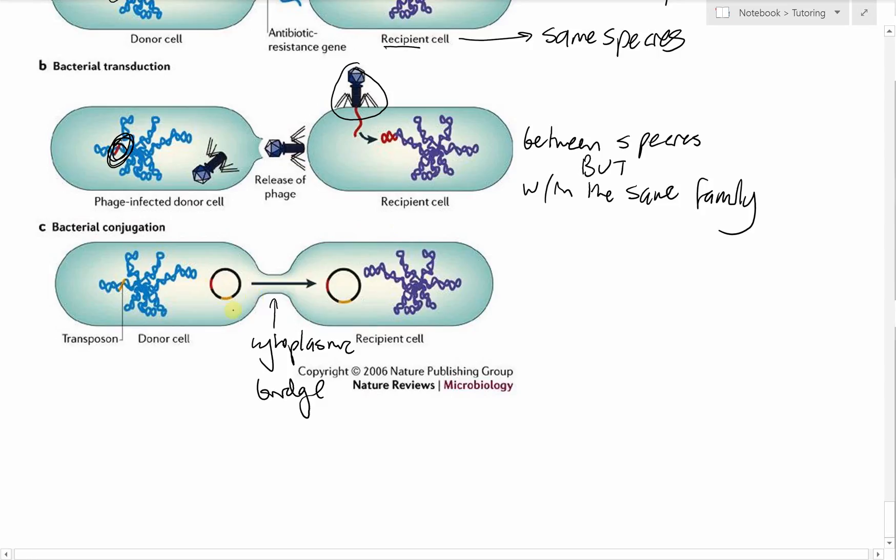You don't have a net loss of plasmid from the donor cell because this plasmid will just replicate and then move across. So this donor cell retains its plasmid and also gives a new plasmid to the recipient cell. These bridges can also overcome the host barriers of phage.